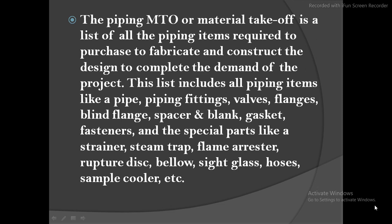This list includes all the piping items like pipe, piping fittings, valves, flanges, blind flange, spacer and blind, gasket, fastener, and special parts like strainers, steam traps, flame arrestors, rupture discs, elbows, sight glass, and whatever items come in the P&ID and whatever things are required in the project.